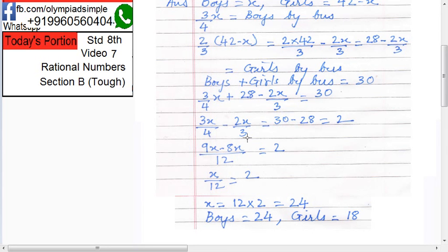LCM is 12. So 9x minus 8x upon 12 equals to 2. Therefore x upon 12 equals to 2. Now x is 24.